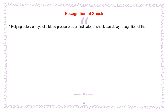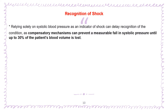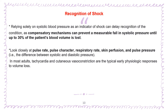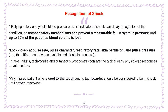Recognition of shock. Relying solely on systolic blood pressure as an indicator of shock can delay recognition of the condition, as compensatory mechanisms can prevent a measurable fall in systolic pressure until up to 30% of the patient's blood volume is lost. Therefore, look closely at pulse rate, pulse character and respiratory rate, skin perfusion and pulse pressure. In most adults, tachycardia and cutaneous vasoconstriction are the typical early physiologic responses to volume loss. Any injured patient who is cool to the touch and tachycardic should be considered to be in shock until proven otherwise.